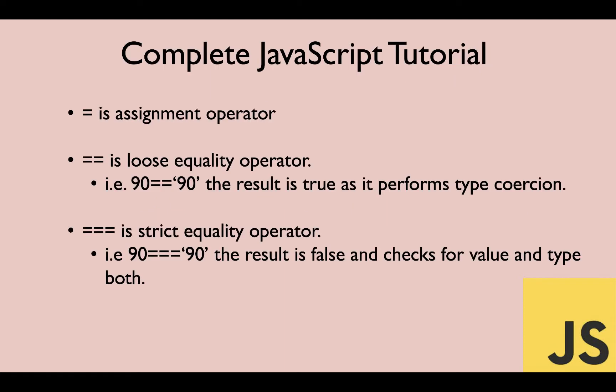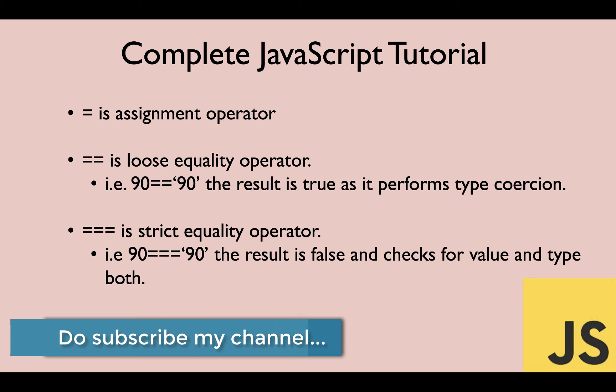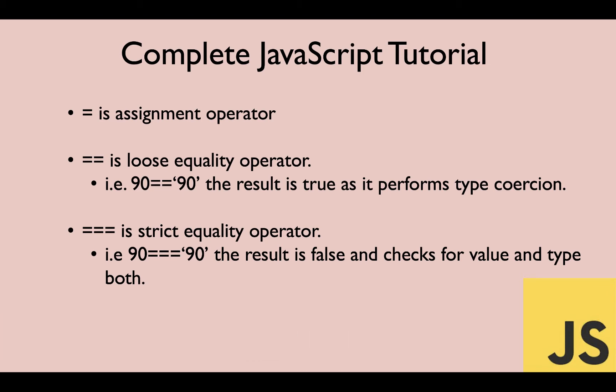Let's get started. We will follow the below content for our tutorial today. Single equal to is an assignment operator, as we all know — we can assign a value to a variable using this single equal to operator. The second is the double equal to operator, which is a kind of equality operator that checks for equality, but it's a loose equality operator. We will see what exactly 'loose' means in this case.